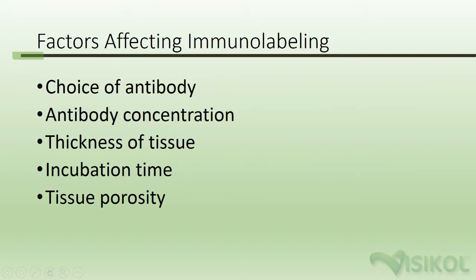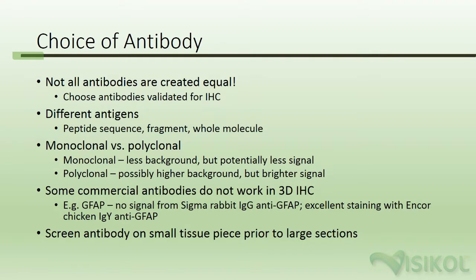There are a number of factors that affect immunolabeling, including the choice of your antibody, the concentration of the antibody, the thickness of the tissue, the incubation time, as well as the tissue's porosity.